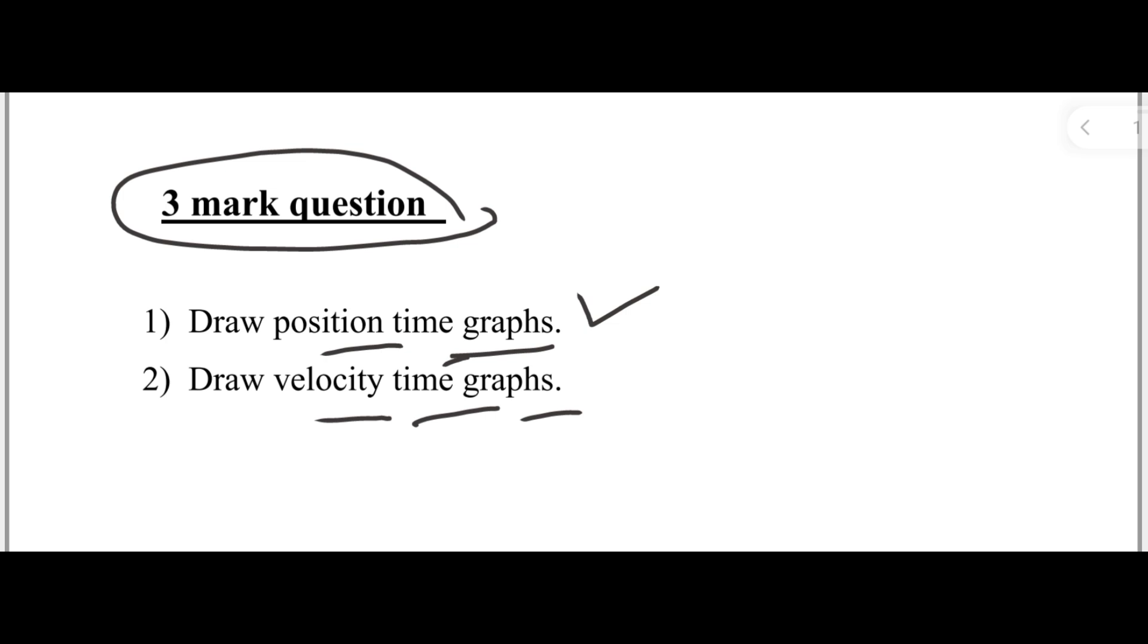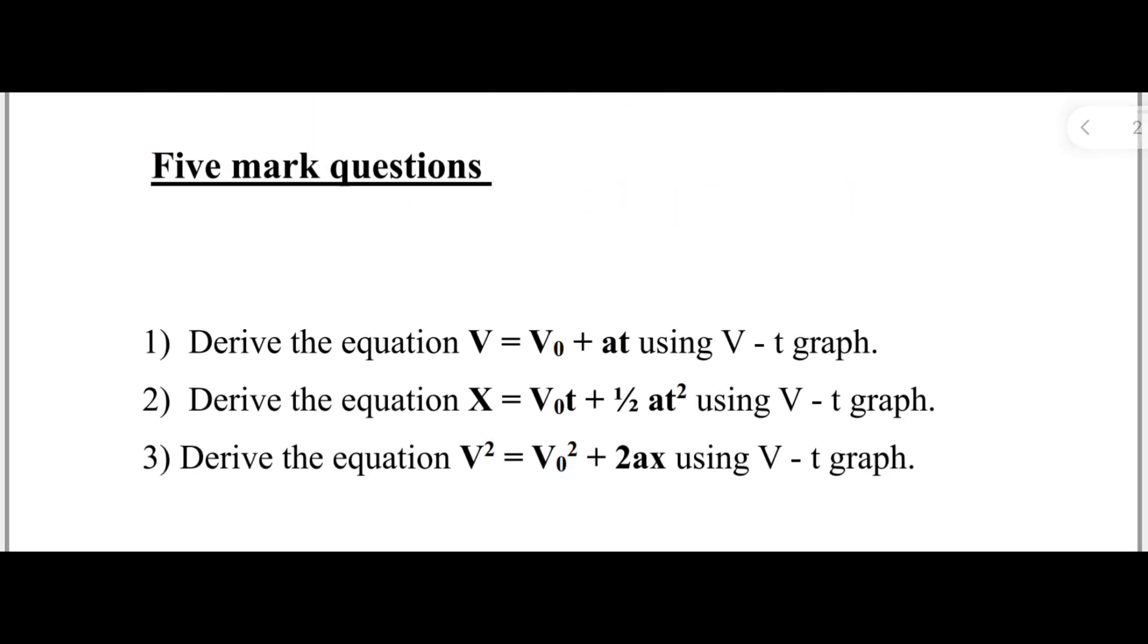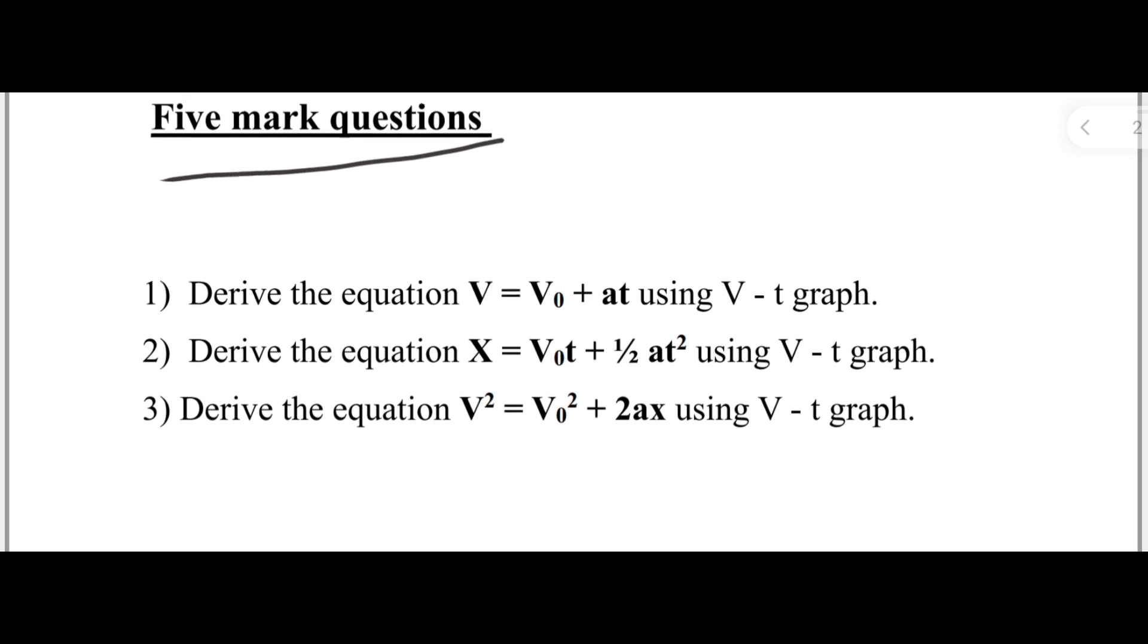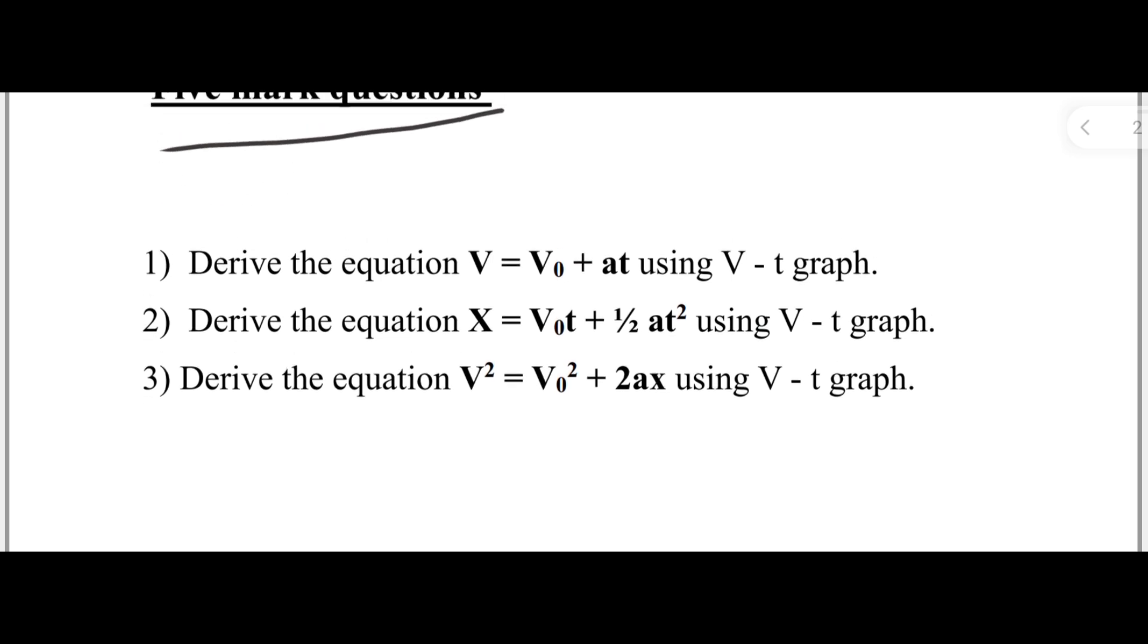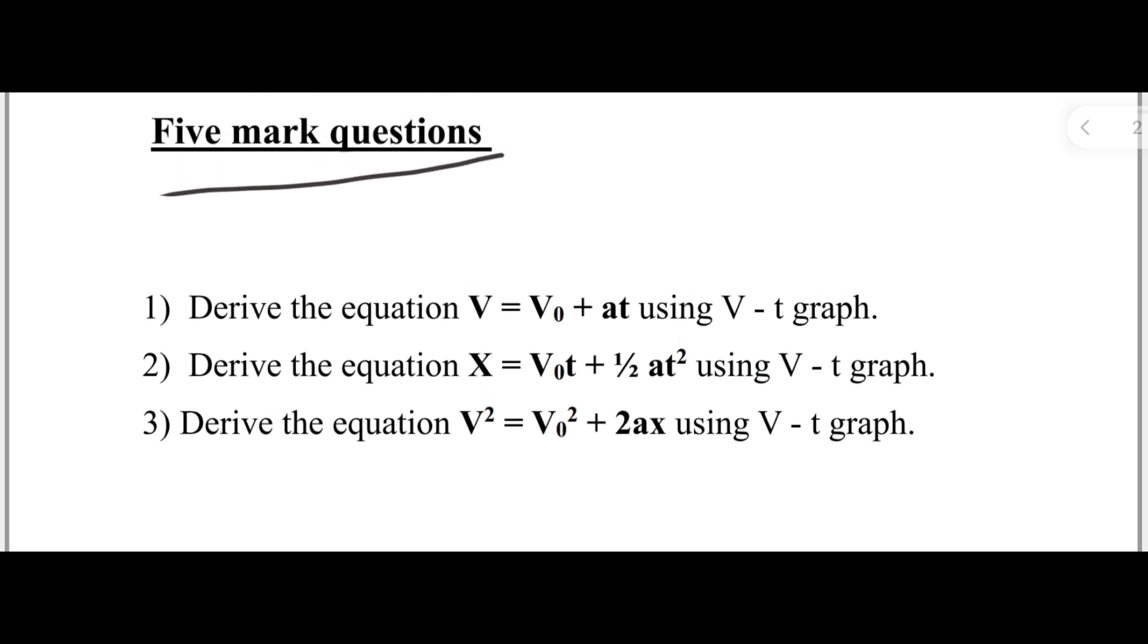Next I will move to the five-mark type questions. Five-mark type questions - here the first one is: Derive the equation v = v₀ + at using V-t graph.